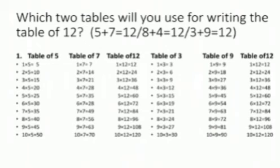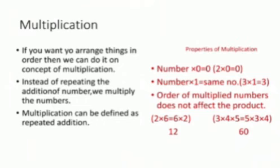Same way, if we will write table of 3 and 9, we will add the products of that number and same way we will get table of 12. Now, these are basic information for multiplication. If you want to arrange things in order, then we can do it on concept of multiplication. Instead of repeating the addition of number, we multiply the numbers. So, in short, multiplication is repeated addition. Here are some properties or we can say some things to remember for multiplication.